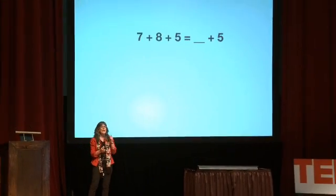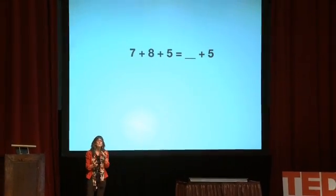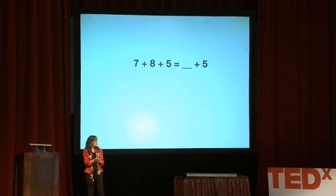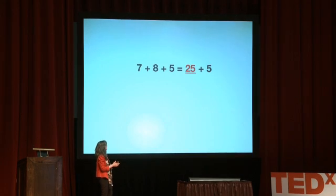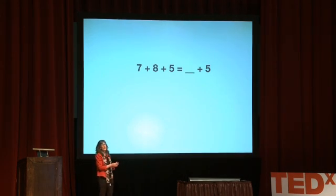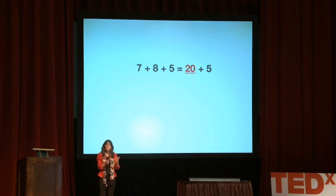So let's look first at the gestures that we see. In order to look at that, we want to start with a math problem. Here's a pretty simple little math problem. It turns out most fourth graders in America get this problem wrong. They can't solve it. When they can't solve it, they make one of two errors: they either add up all the numbers in the problem — the 7, the 8, and the 5 and the 5 — and put 25 in the blank, or they add up the numbers on the left side and get 20 and put that in the blank.